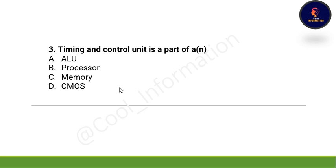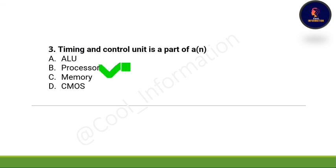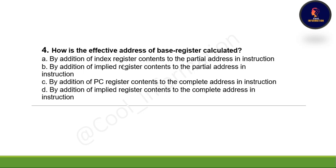Next question: Timing and control unit is a part of — option A, ALU; option B, processor; option C, memory; or option D, CMOS. The correct option is option B, which is processor.